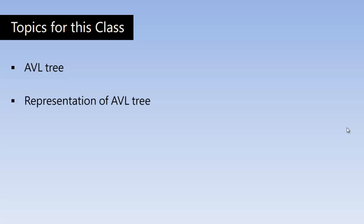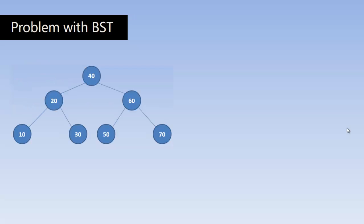Before learning that, let me explain the problem with the binary search tree. Suppose I want to search for an element when the tree is balanced. This tree is balanced because there are two children for every node in this tree, so it is balanced.